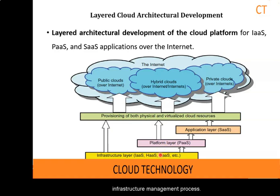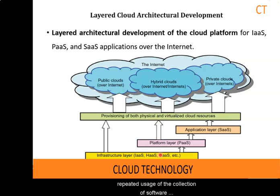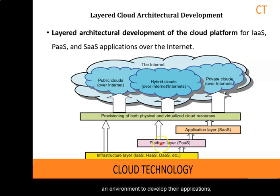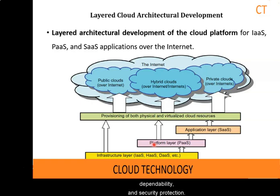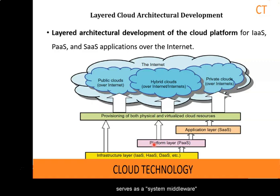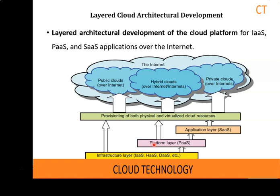Internally, virtualization realizes automated provisioning of resources and optimized infrastructure management. The platform layer is for general purpose and repeated usage of a collection of software resources. This layer provides users with an environment to develop their applications, monitor execution results and performance. The platform should assure users of scalability, demandability and security protection. The virtualized cloud platform serves as system middleware between the infrastructure and application layers of the cloud.